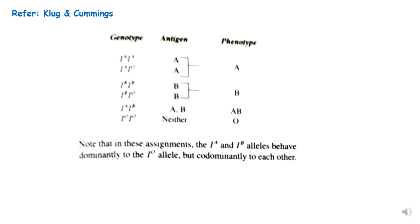IA and IB alleles behave dominantly to the IO allele but co-dominantly to each other. ABO blood group is therefore an example of both co-dominance and multiple alleles. It differs from MN blood group in that its gene is located on chromosome 9, while the MN gene is on chromosome 4, and they produce different antigens — MN antigens versus A and B antigens.